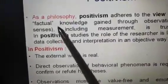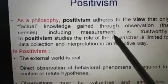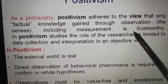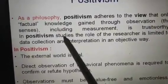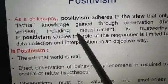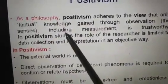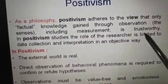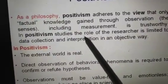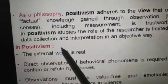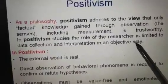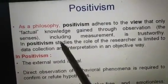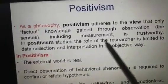In philosophy, Positivism adheres to the view that only factual knowledge gained through observation — including measurement — is trustworthy. This is very important. In Positivism studies, the role of the researcher is limited to data collection and interpretation in an objective way. You have to be objective, you have to be factual, and you have to be trustworthy in your measurement.